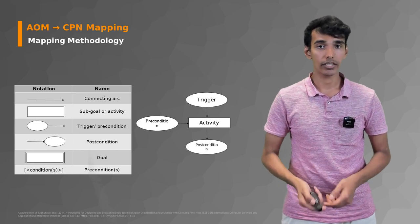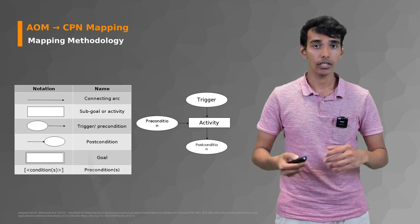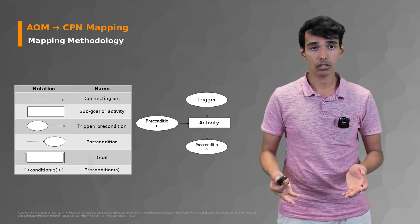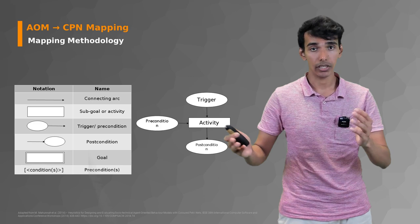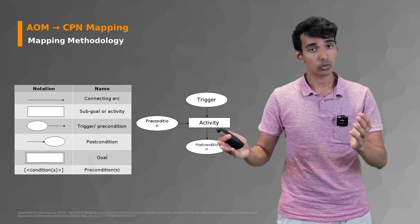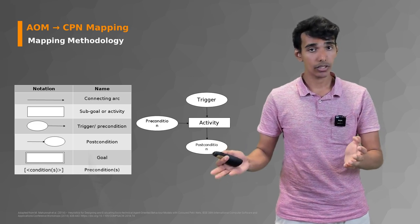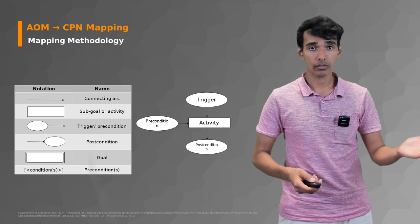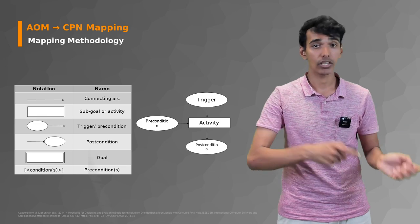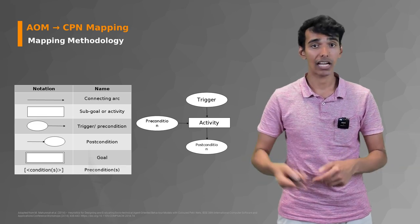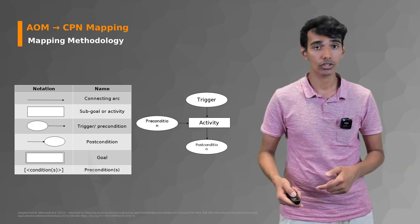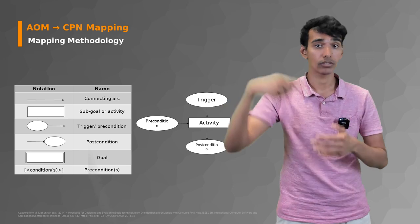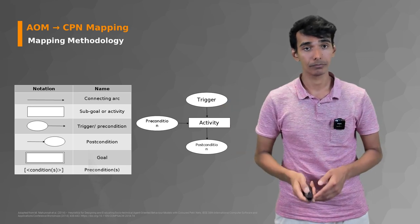On the right-hand side, we have an activity modeled as a transition in the CPN. We have a precondition as an incoming place with an incoming arc, a postcondition, and a trigger which is another place with an incoming arc.